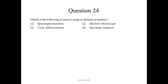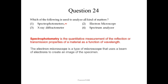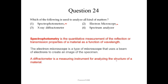Question number 24: which of the following is used to analyze all kinds of matter? A spectrophotometer measures the reflection or transmission properties of a material as a function of wavelength — this is not the option. An electron microscope uses a beam of electrons to create an image of the specimen — also not correct. An X-ray diffractometer is a measuring instrument for analyzing the structure of a material, so this is our correct option.